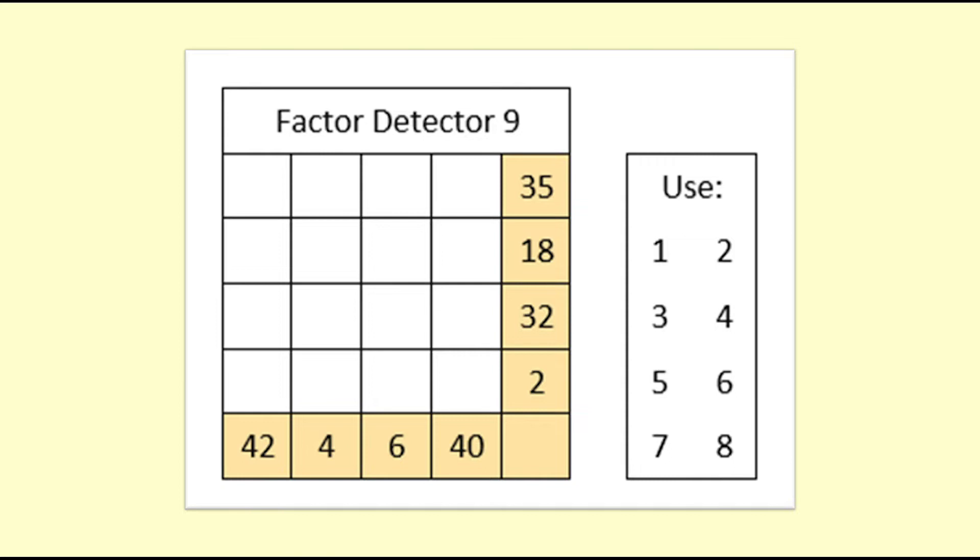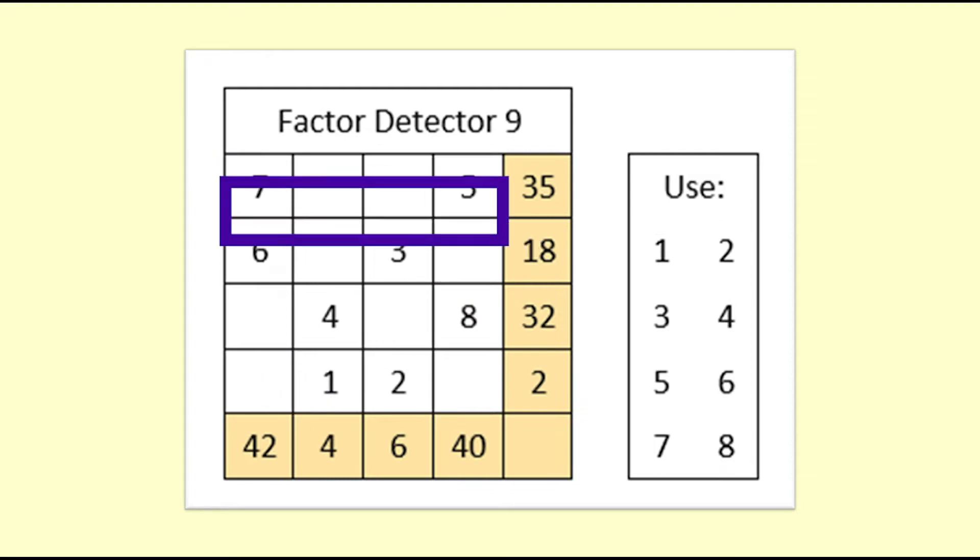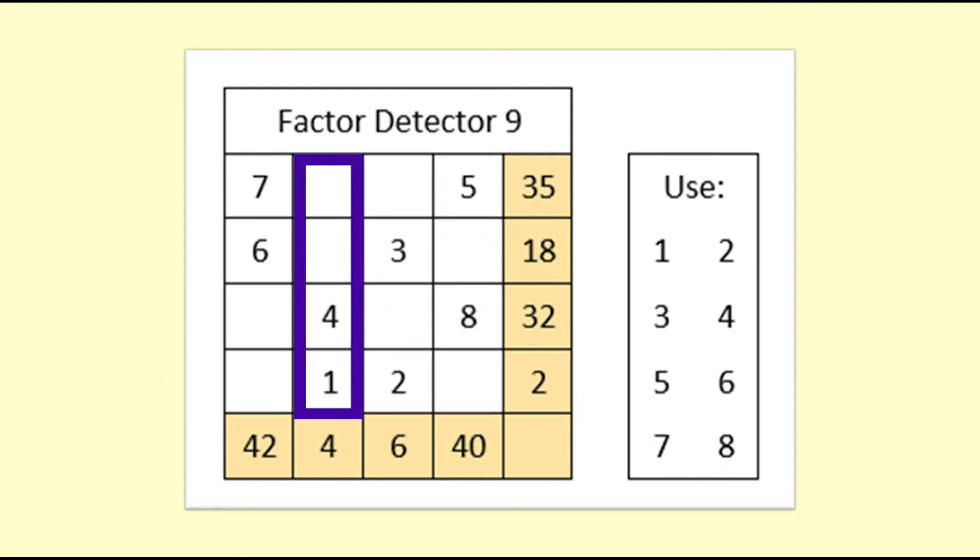We will solve a 4x4 Factor Detector puzzle. The aim is to place the 8 numbers listed on the right into the grid on the left. Here is a completed puzzle. You can see that there are 2 numbers in each row and 2 in each column.